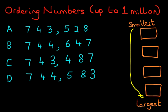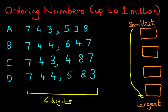So how do we do this? Well, first things first, let's check how many digits there are. In total there are six digits. If one number had, for example, five digits, that would immediately become the smallest number if all the others were six digits. But we've checked — all of them have six digits.